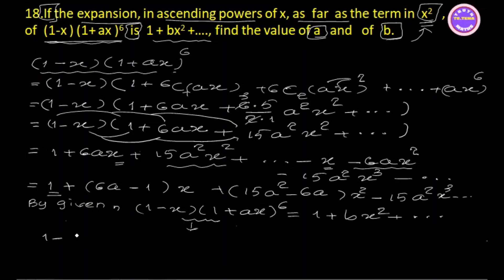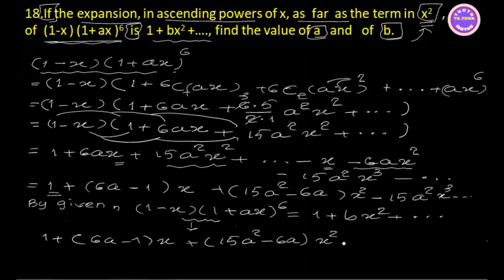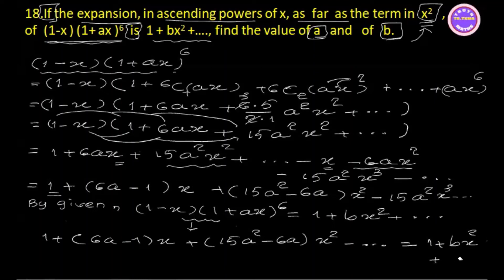1 plus 6a minus 1 times x, plus 15a squared minus 6a times x squared, minus 15a squared x squared, and so on, equal to 1 plus b·x squared plus and so on.